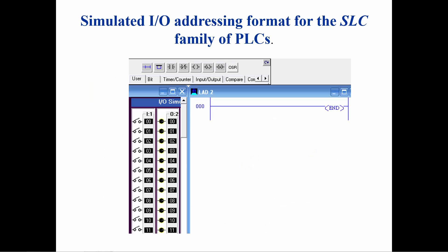To program a contact you click on the symbol for an examine if close contact and drag it to the desired rung. The instruction will be placed to the right of the small box when it turns green.